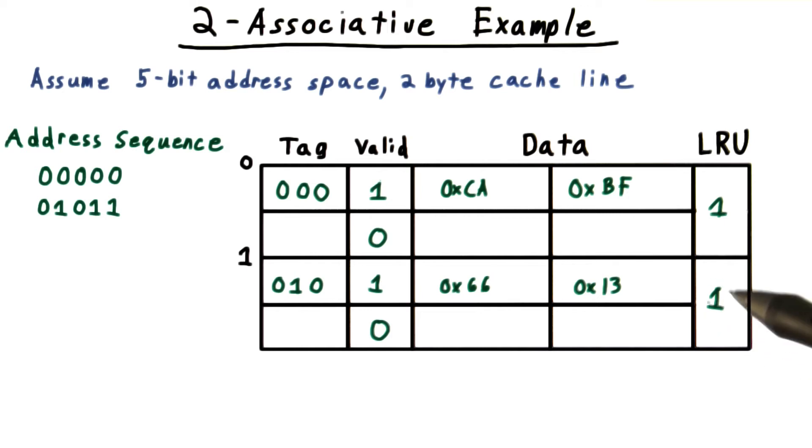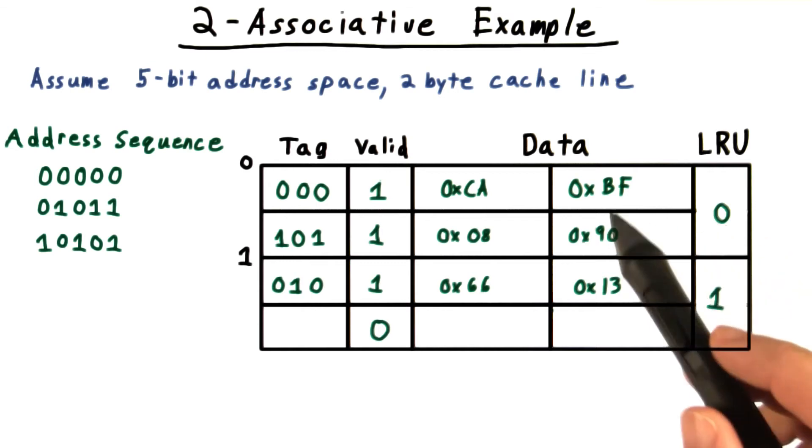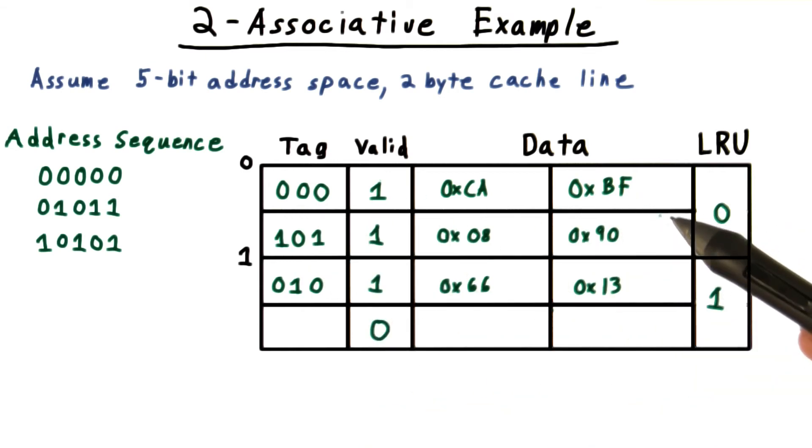And marking the least recently used bit. Our next address has index zero, so it gets written there. Notice that I chose this slot because the LRU had been one. And I flipped it back to zero because this is now the least recently used item in this part of the cache.